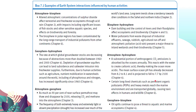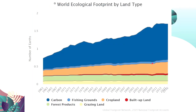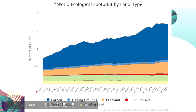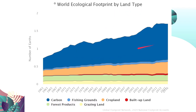This is from the Global Footprint Network — it shows the world ecological footprint by land type. Much of the footprint is for carbon, followed by fishing grounds, cropland, built-up land, forest products, and grazing. It is quite alarming that from 1961, our ecological footprint by land type has been steadily increasing.